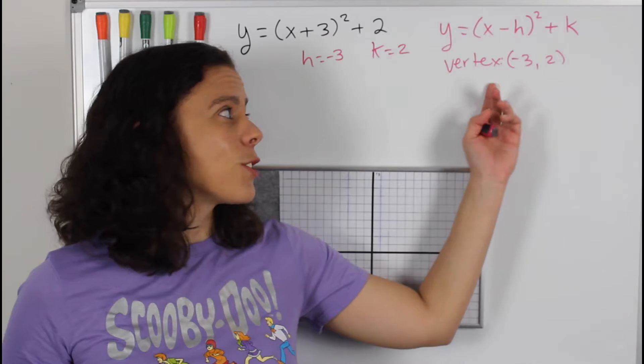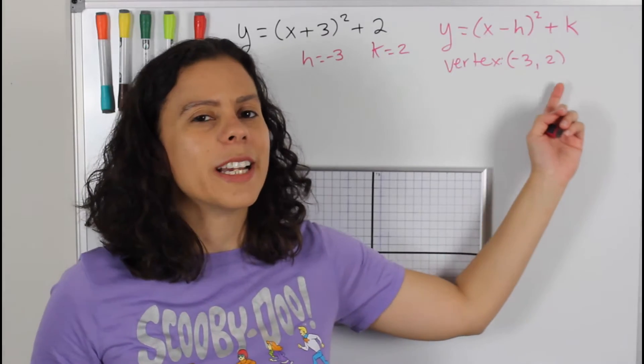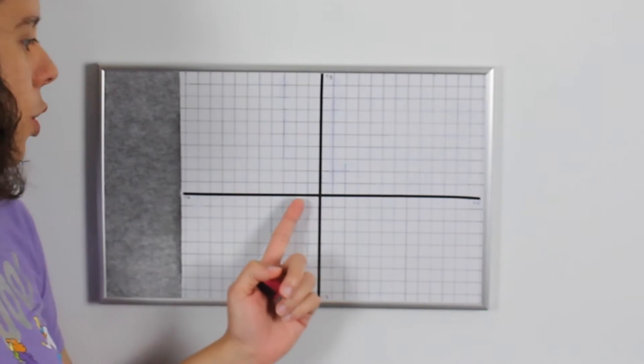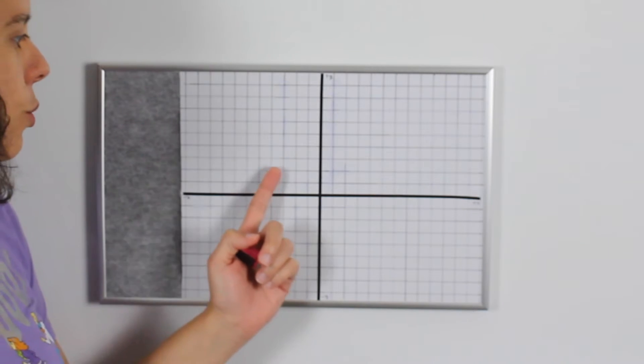So my vertex is just the point negative three, two. Let's graph it. From the origin, I'll just go three to the left and I go two up.